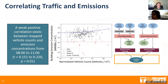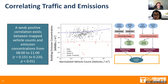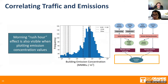Moving to our quantitative analysis, we found a weak positive correlation between mapped vehicle counts and emission concentrations in a period from 8am to 11am, which can be seen by the upward sloping dashed blue line running through the dark gray data points in this plot. This morning rush hour effect is also visible when plotting emissions concentration values, as seen by the cluster of dark dashed lines that cluster around the peak of the emissions concentrations histogram.